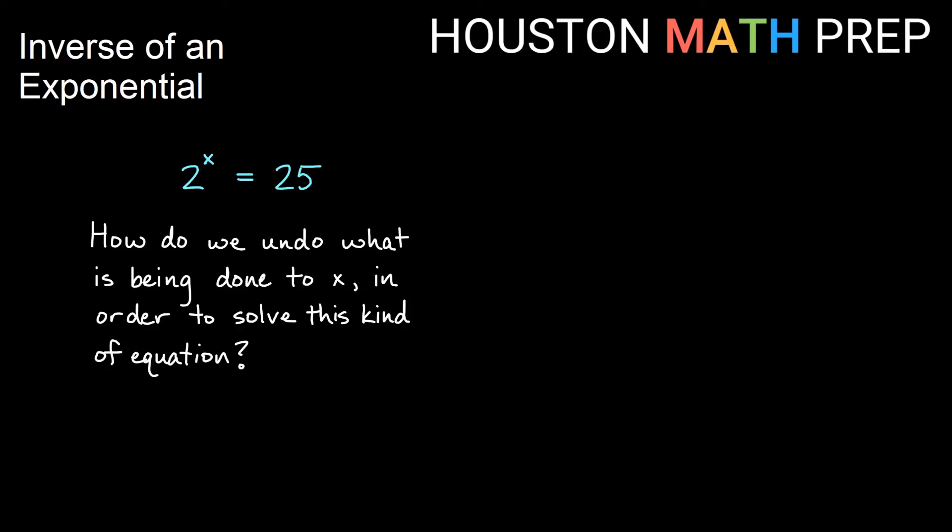In other words, how do I undo what is being done to x in order to solve this kind of equation? Is this one like y equals x squared where it doesn't really have an opposite operation? It doesn't have an inverse? Or is this one where it does actually have an exact operation, and I don't need to do some kind of a workaround.